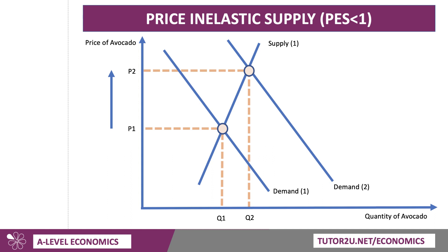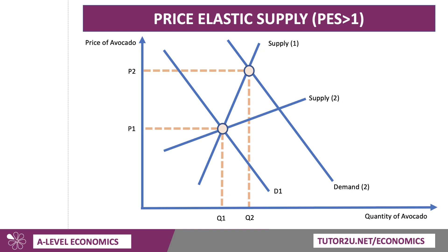I'm going to develop the diagram by showing a more price elastic supply curve that cuts through P1 and Q1 — that is supply curve S2. This time, growers are more easily able to respond to rising demand. The consequence is that quantity rises to Q3, and the price does go up but not as much — only from P1 to P3. That's a price elastic supply curve where the coefficient is greater than one.